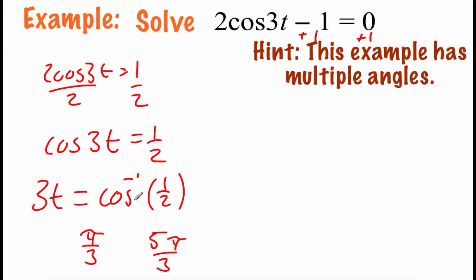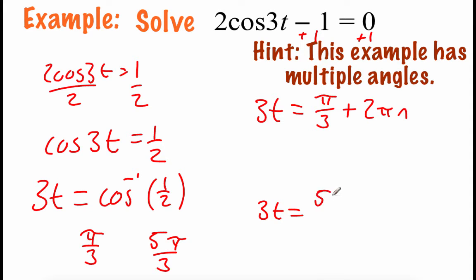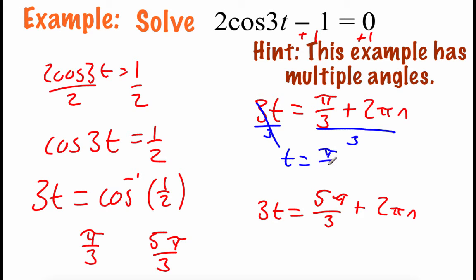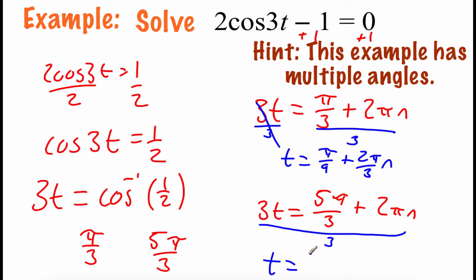This problem did not give us a restricted interval, so we're going to have to do all that extra coterminal angle work. So we get 3t equals pi over 3 plus 2 pi n, and also 3t equals 5 pi over 3 plus 2 pi n. Now we need to get t by itself, so we divide everything by 3. On the first one: t equals pi over 9 plus 2 pi over 3 times n. On the second one: t equals 5 pi over 9 plus 2 pi over 3 times n.